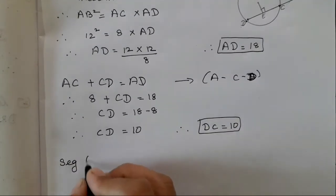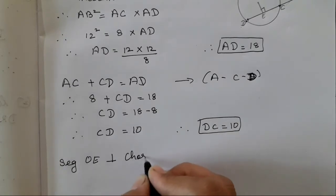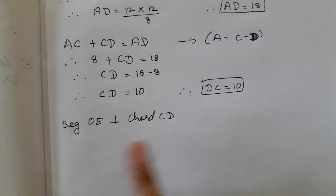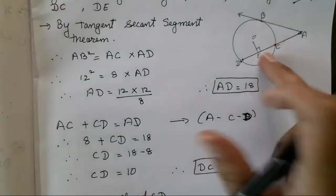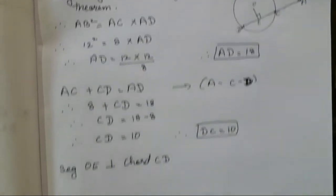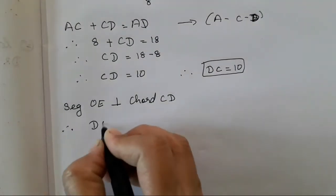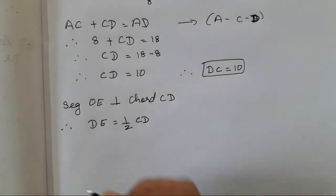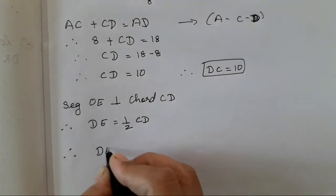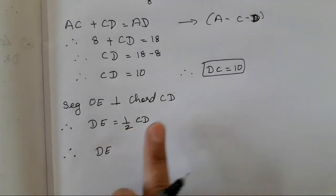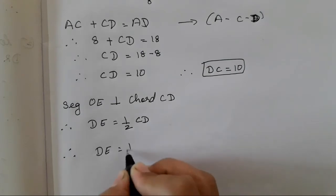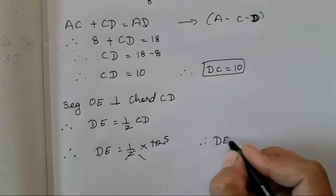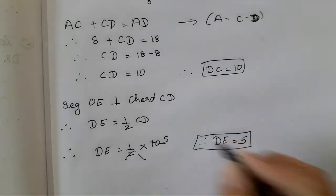Segment OE is perpendicular to chord CD, as already given. A perpendicular drawn from the center to a chord bisects the chord into two equal parts. Therefore DE = half of CD = half of 10. Therefore DE is equal to 5. So all three values are found: AD = 18, DC = 10, DE = 5.